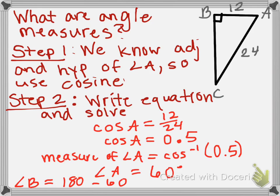Now to find angle B, we need to use our triangle rules. We know it is a right triangle and that a triangle measures 180 degrees total. So we are going to take 180, subtract the 60 that we just found for angle A, and then subtract 90 for the right angle. We find out that the missing angle is going to be 30 degrees. It is actually angle C on this drawing — I accidentally wrote angle B, so disregard that. It is angle C that we are finding is 30 degrees.